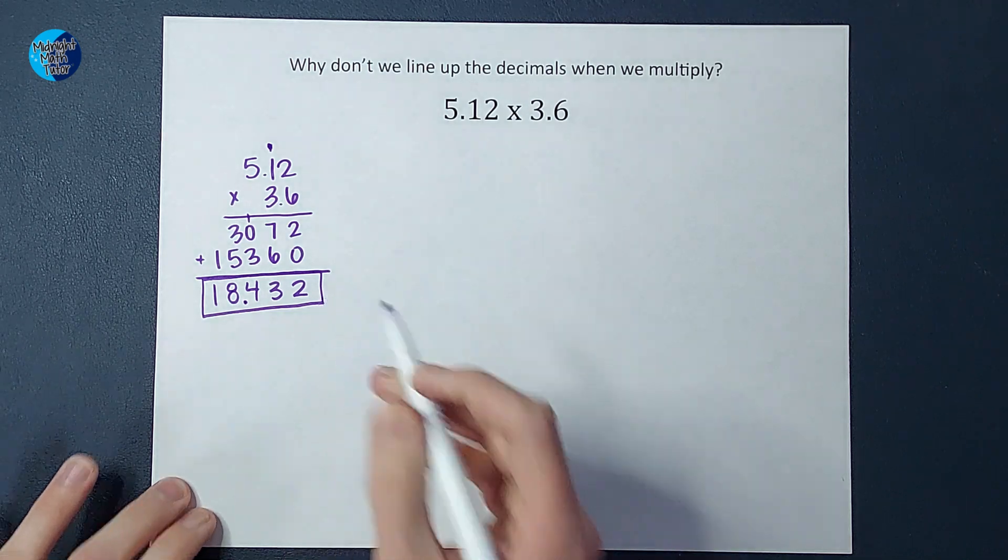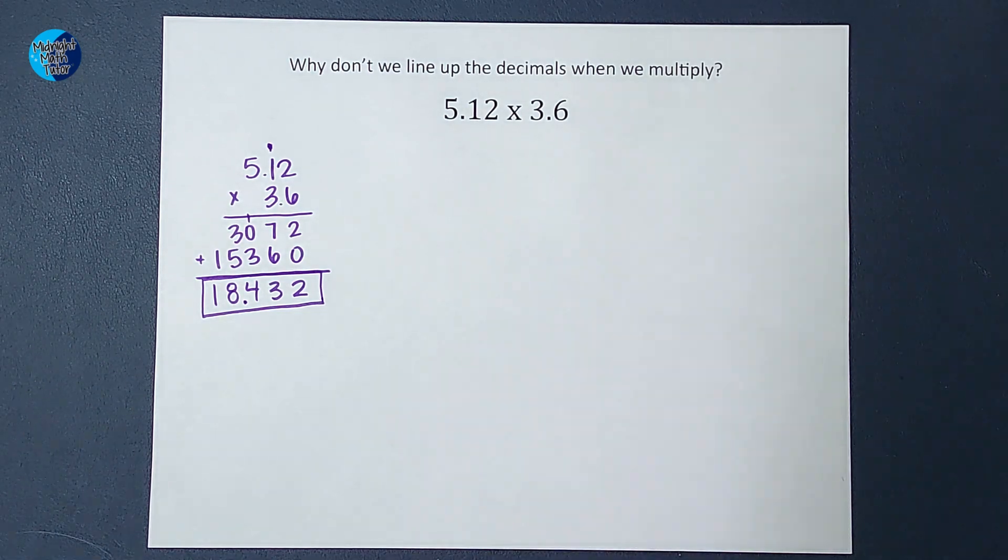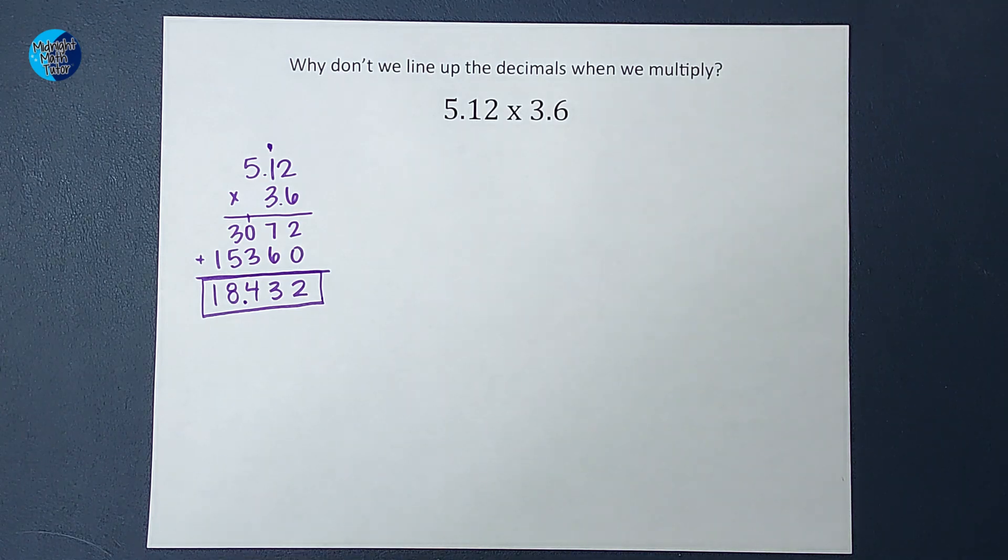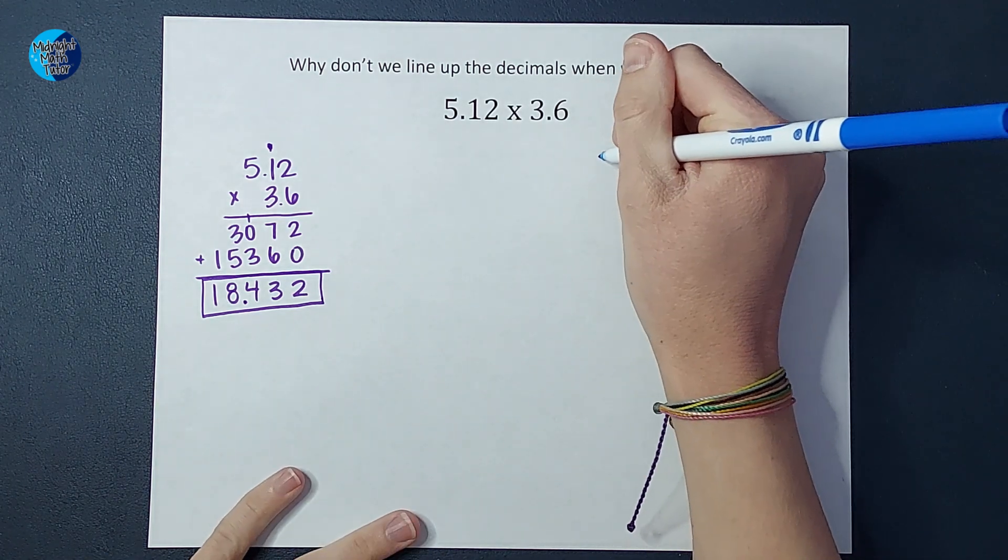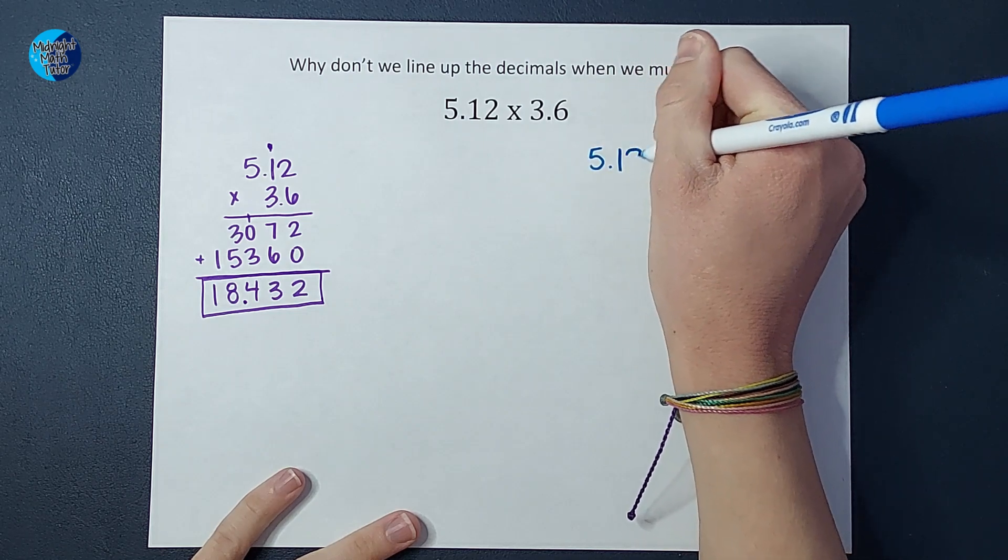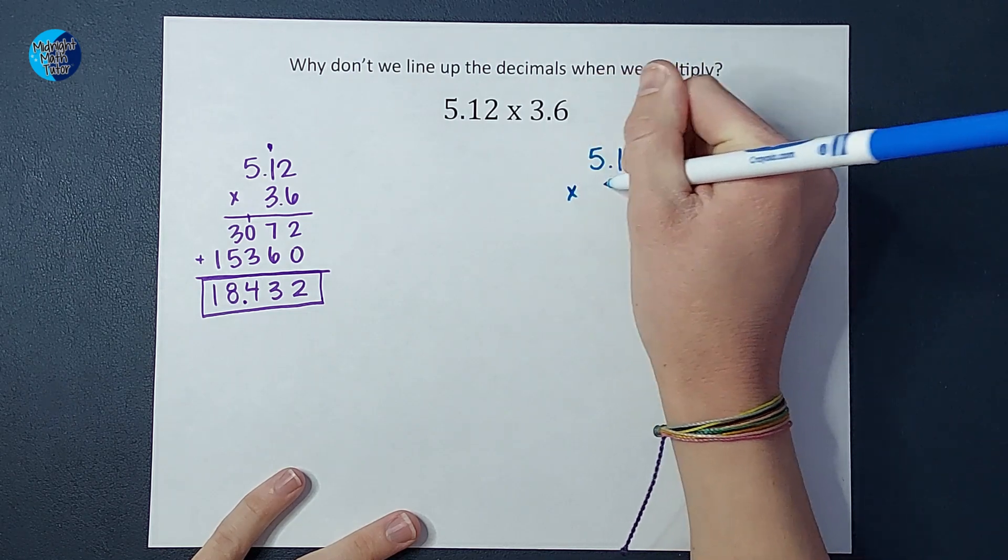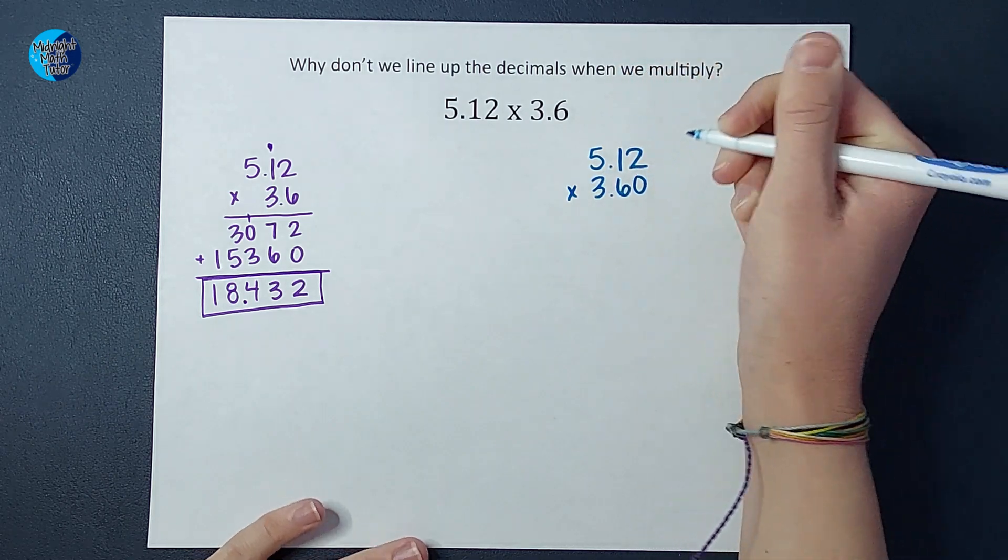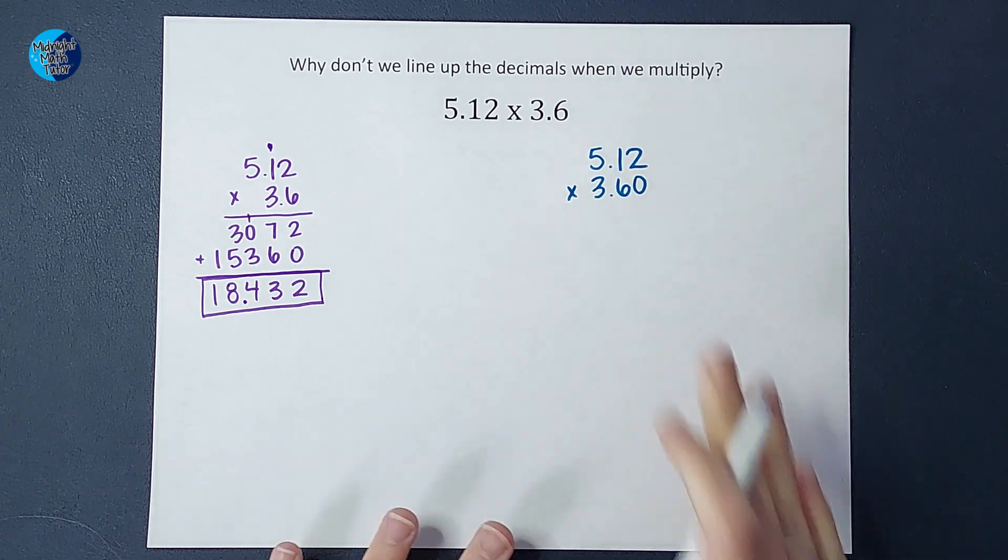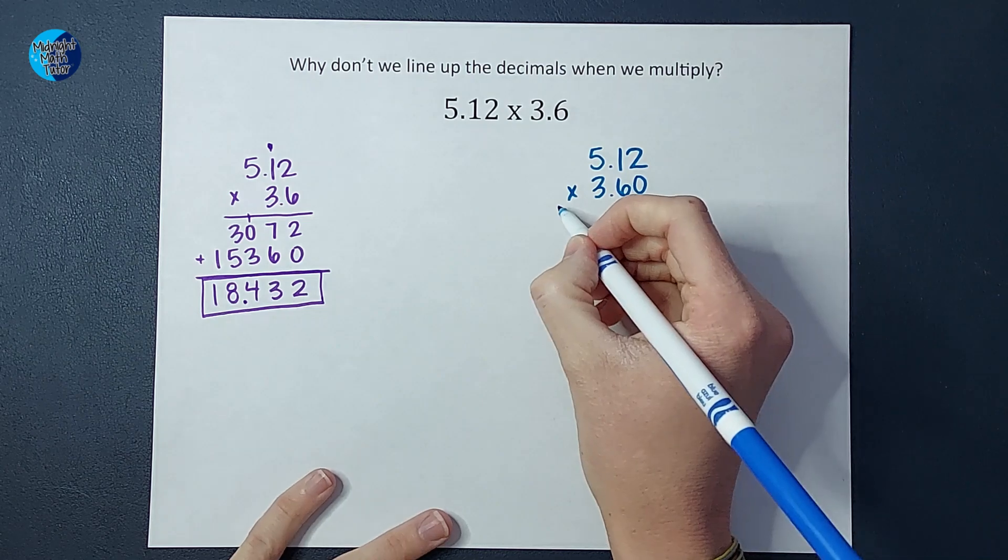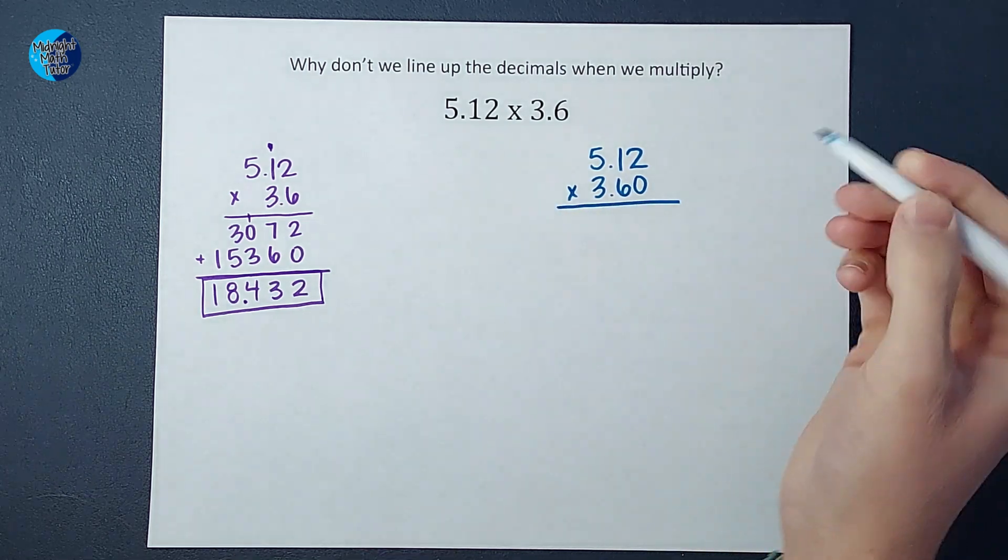Now let's see what happens if we make the effort of being like, all right, we got to line up the decimals. Let's see what happens. So if I wanted to line these up to multiply, I would do 5.12 times 3.60, right? If you've been adding and subtracting these, you're probably used to adding zeros onto the end to make the decimals line up. So let's see what happens when we line up the decimal.